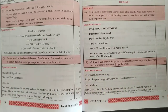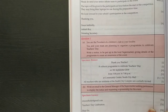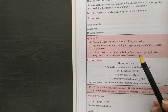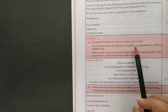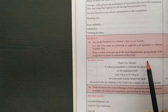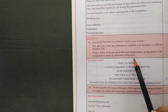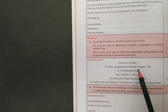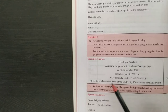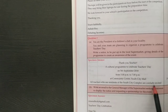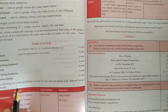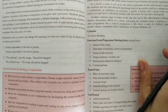Here is the second type of notice. You are the president of the children's club in your locality, and you and your team are planning to organize a program to celebrate Teacher's Day. Write a notice to put up at the local supermarket, giving details of the program to create awareness. The heading is a cultural program to celebrate Teacher's Day, followed by date, time, and venue. All teachers who are residents in the south city complex are accordingly invited. These are the two types of notices — one for the school notice board, and one for public notice boards.